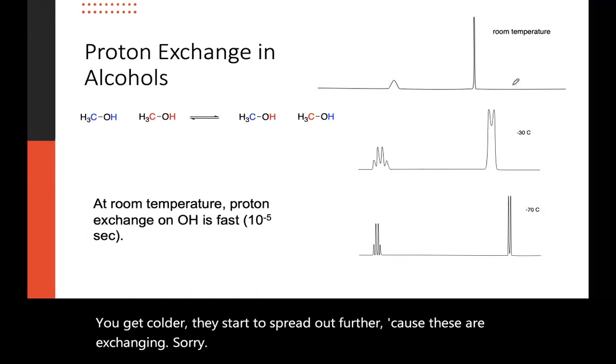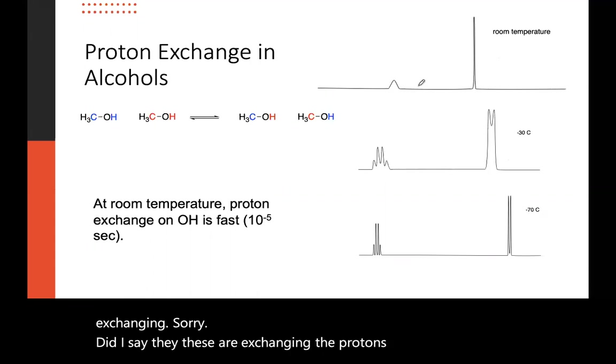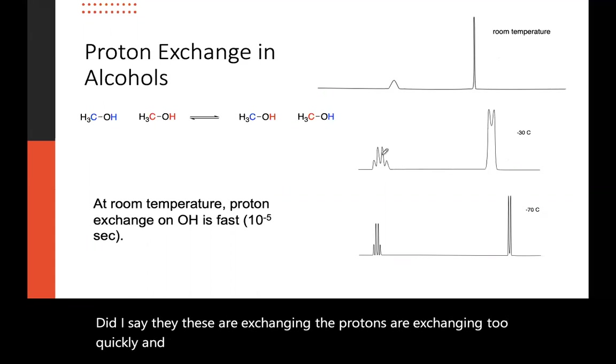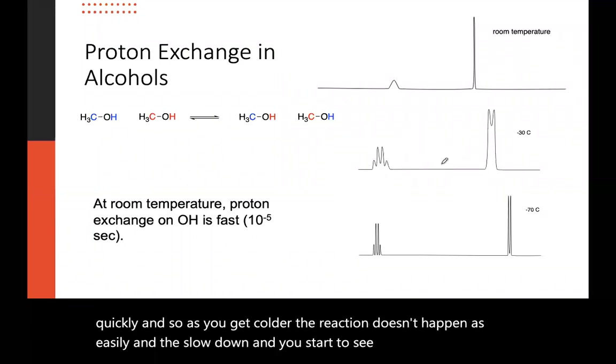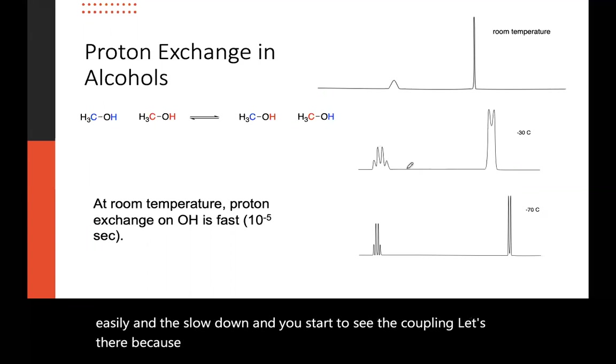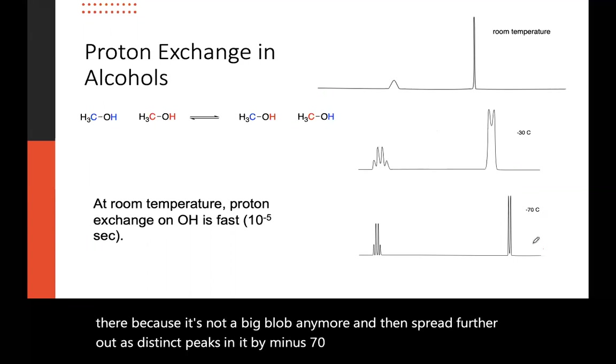Sorry. Did I say they were? These are exchanging. The protons are exchanging too quickly. And so as you get colder, the reaction doesn't happen as easily. And they slow down and you start to see the coupling that's there because it's not a big blob anymore. And they spread further out as distinct peaks. And by minus 70, you have a beautiful quartet and a beautiful doublet.